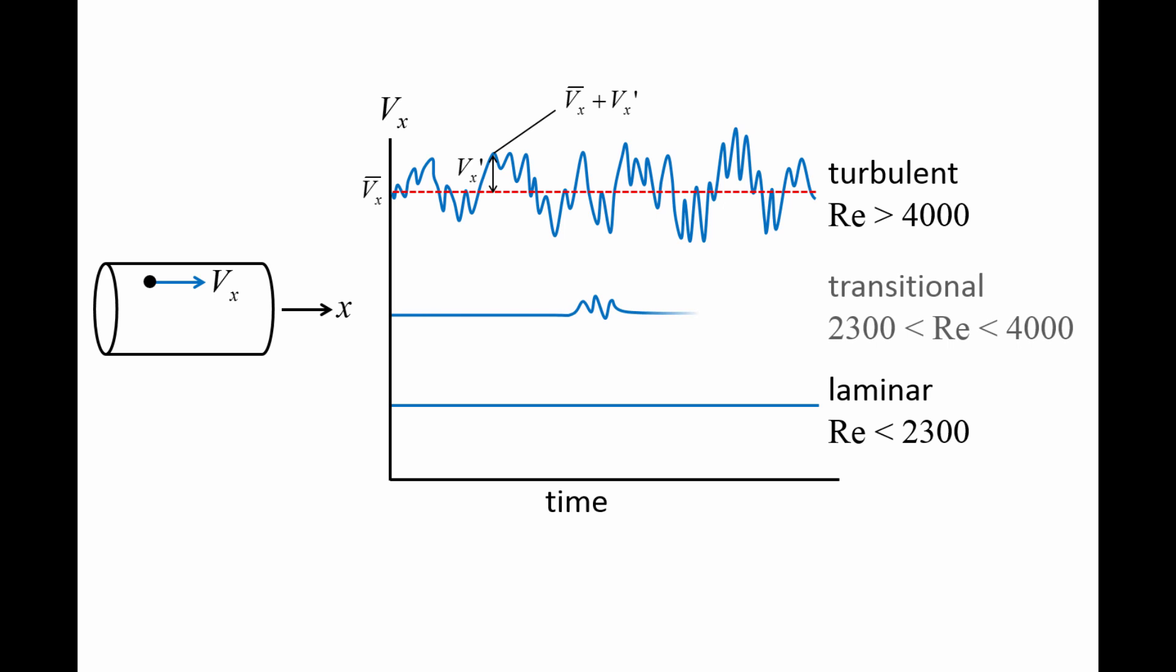For transitional flows, the axial velocity component will appear constant at certain times and will vary unpredictably at other times.